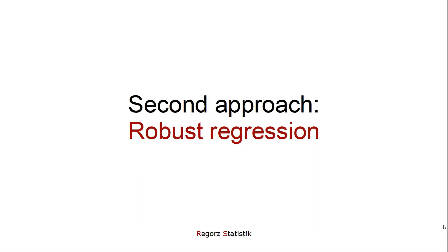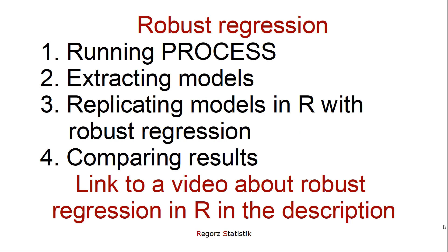The second approach is using robust regression. Robust regression is a family of techniques that is robust against outliers, because outliers can massively bias your results in a regression. The steps are: first, you run PROCESS; second, you extract the models; third, instead of ordinary least squares regression, you run robust regression for the models you found in PROCESS; and as a fourth step, you compare the results. If the results from the robust regression more or less match the results from the OLS regression that PROCESS has run, then your results are robust against outliers. If you want to know how to run a robust regression in R, there's a link to a video in the description.